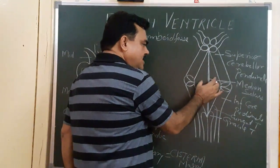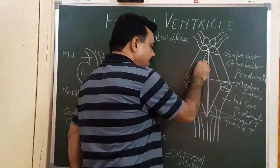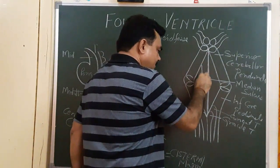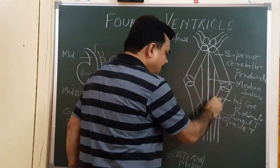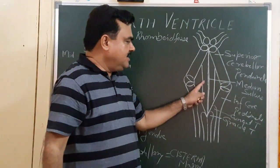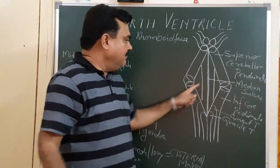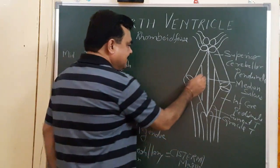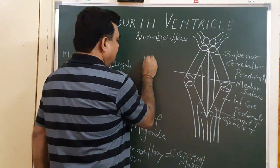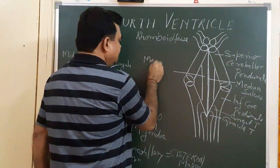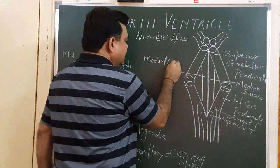Each half is further divided into two parts: lateral and medial. The medial part is occupied by the medial eminence.